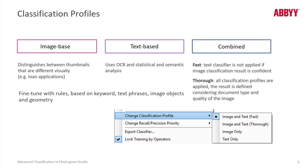The combined profile uses both text and image and can work in two modes: fast or thorough. The text classifier is not applied if image classification results are highly confident. This means you can skip the full page OCR and all the text-based classification algorithms, resulting in a speed improvement.